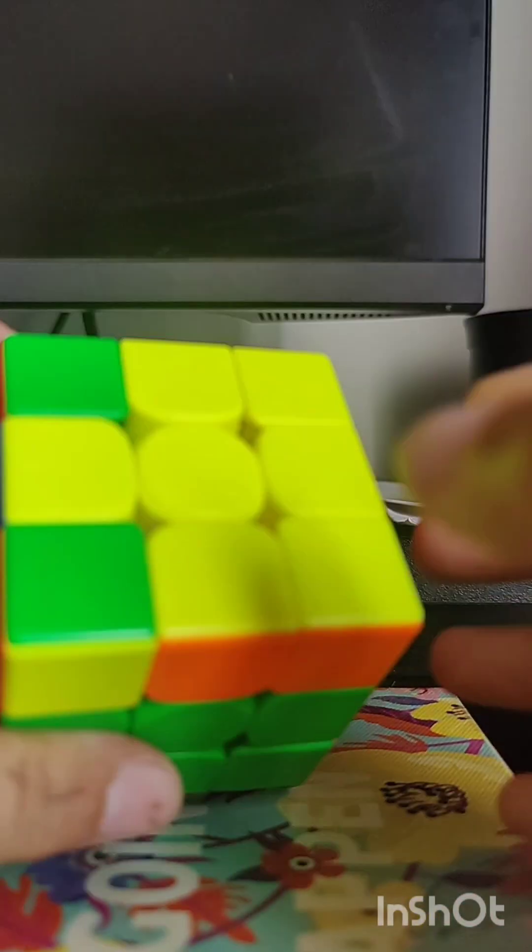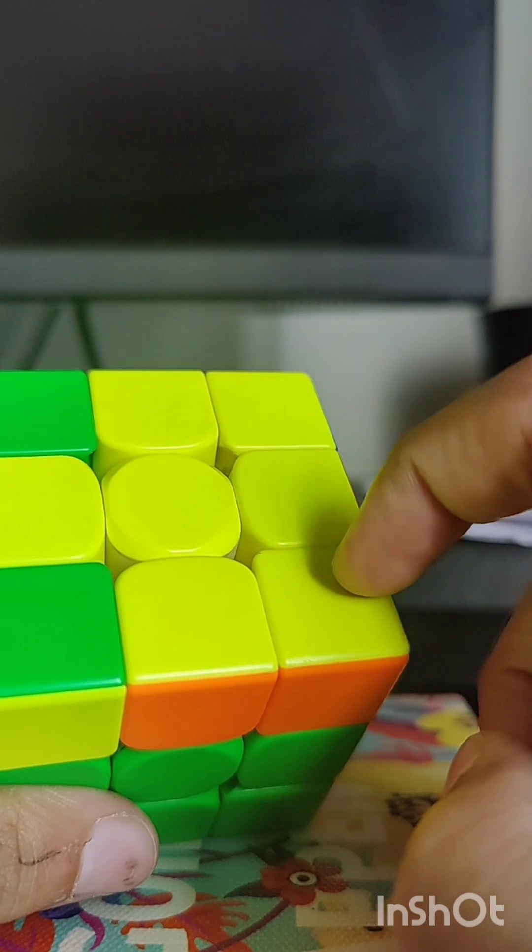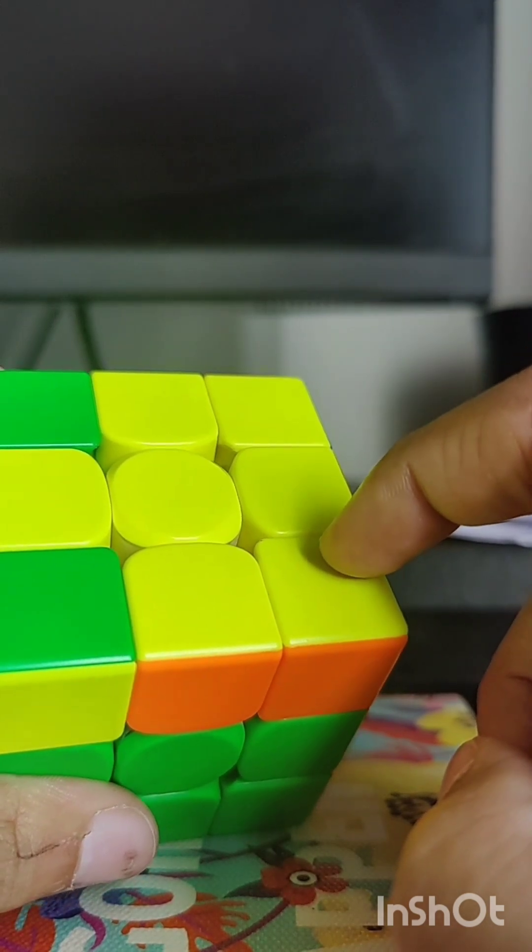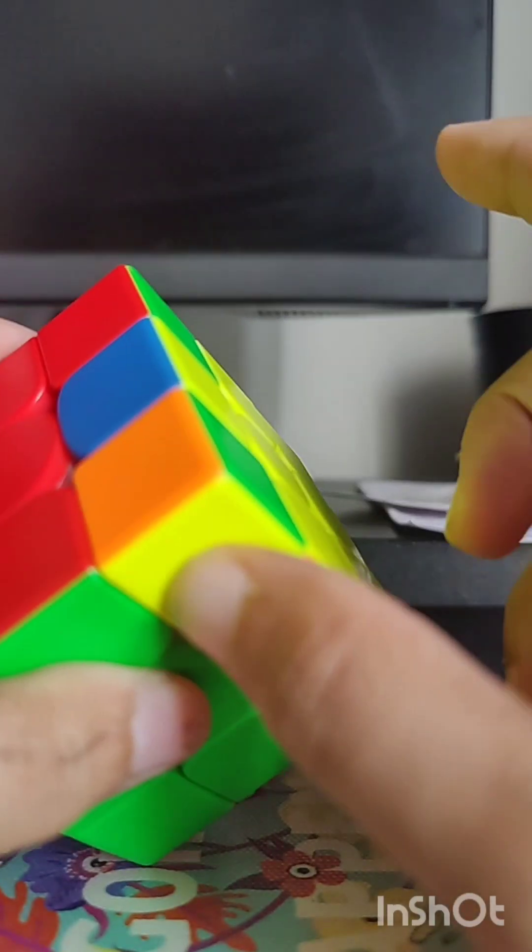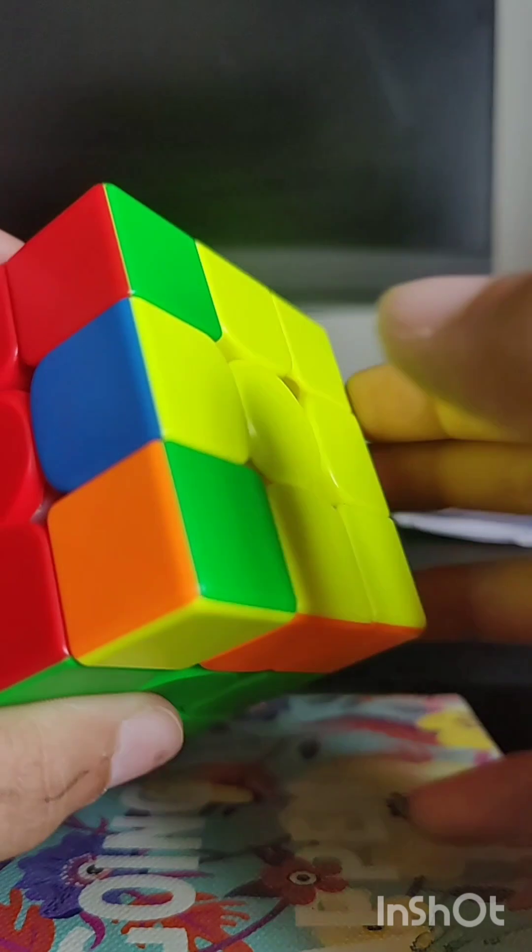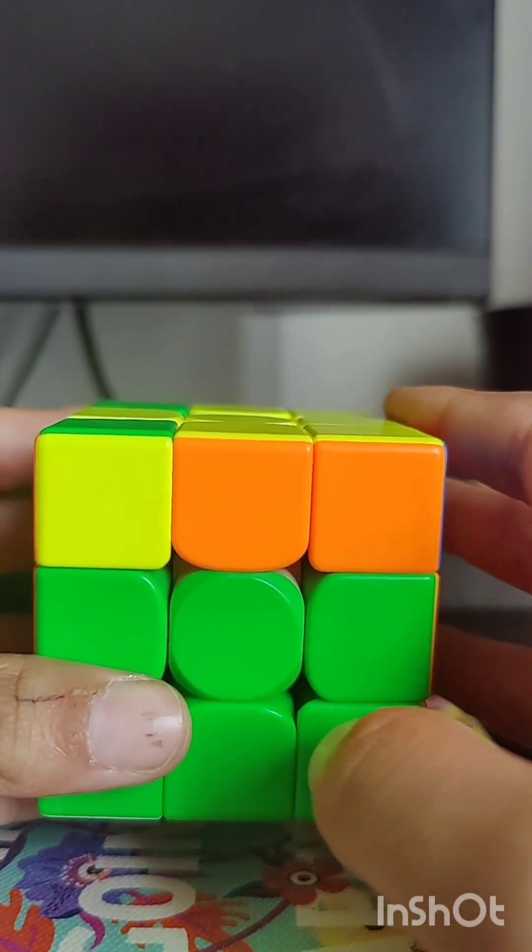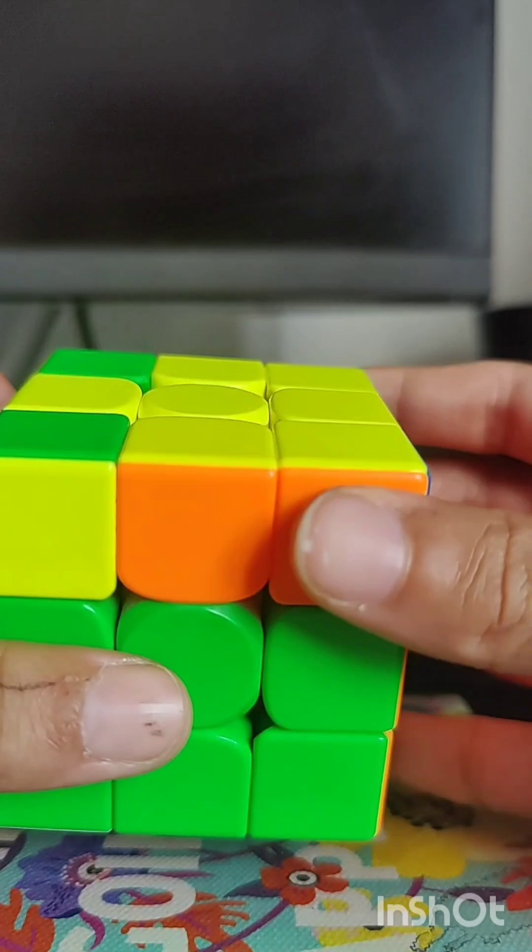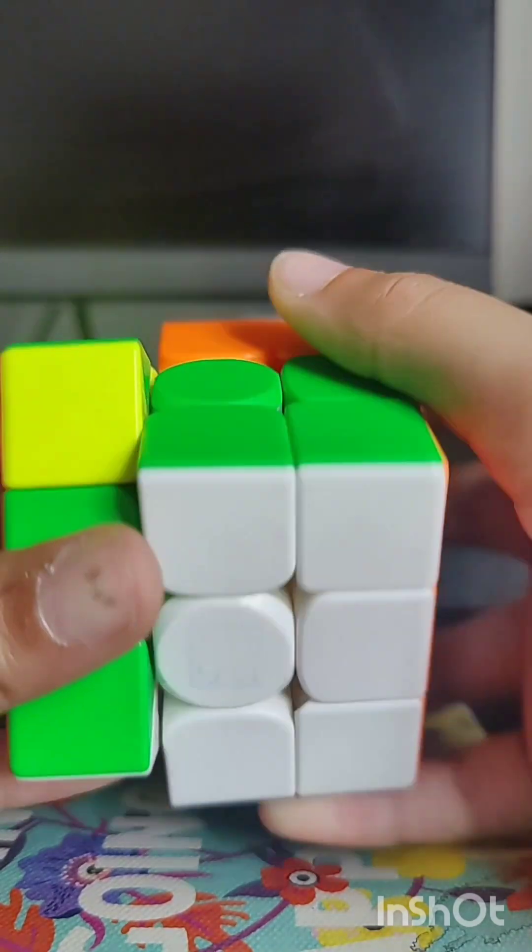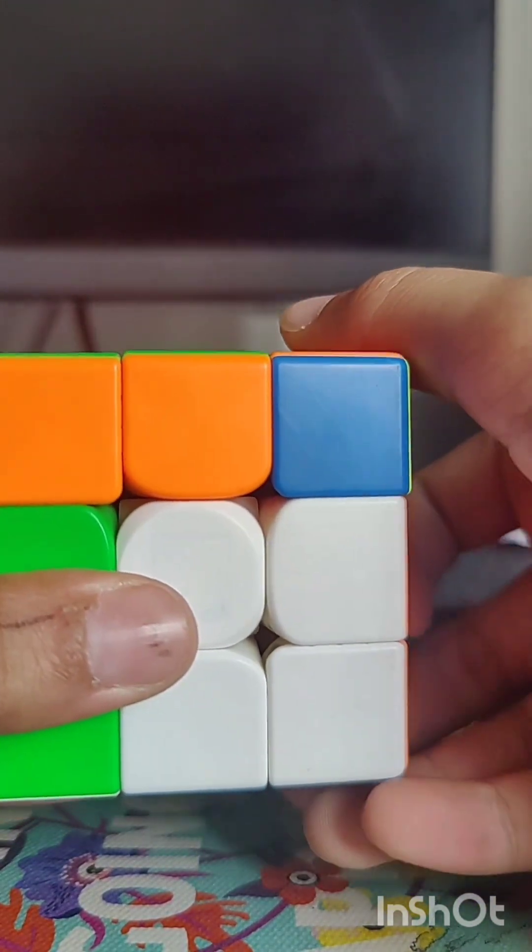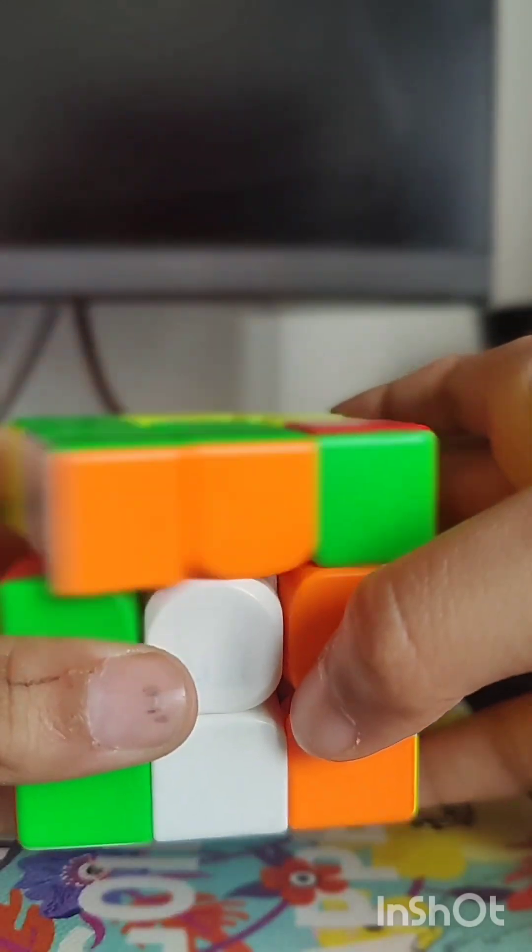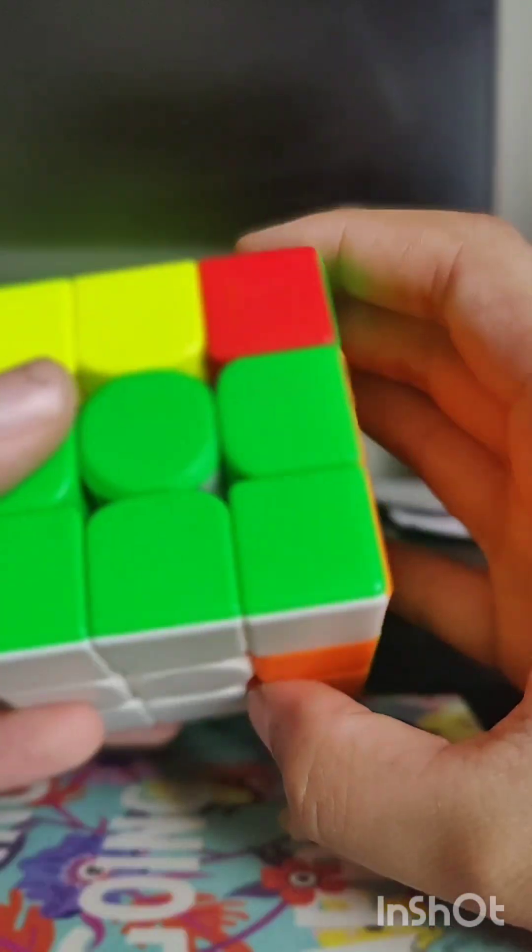This is the next case where we have these two solved and we have this and this. So here what we have to do is first do a wide R, and wide R prime.